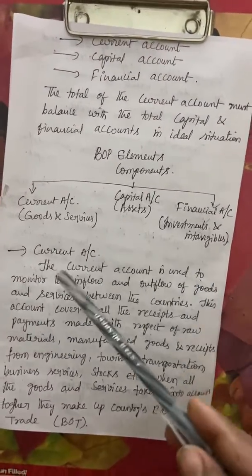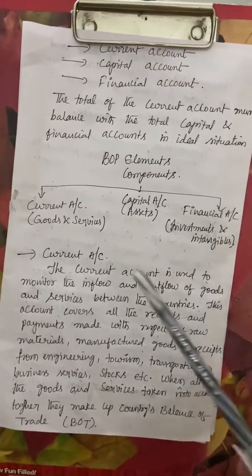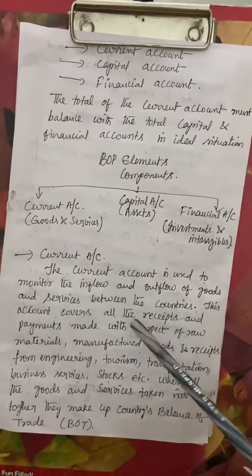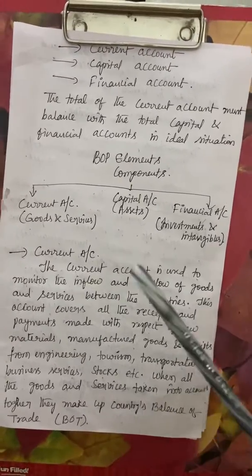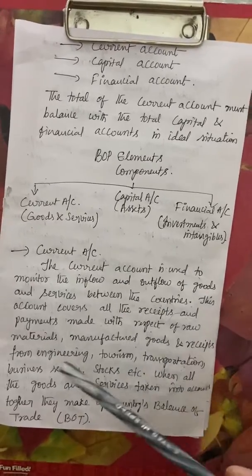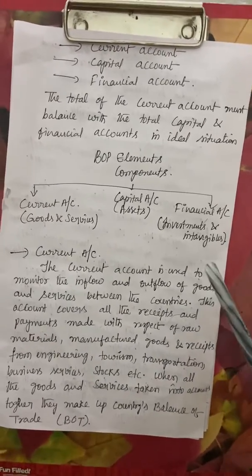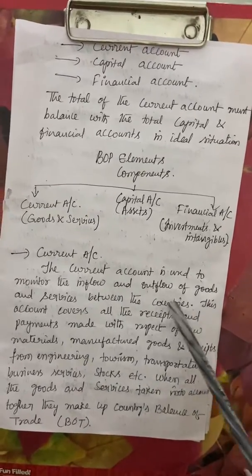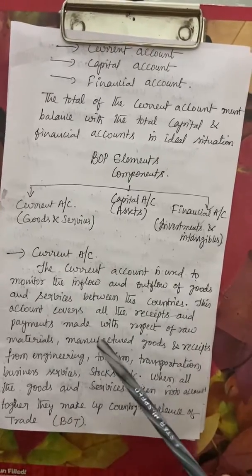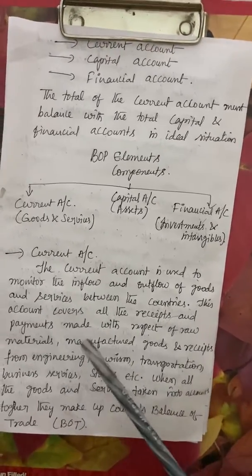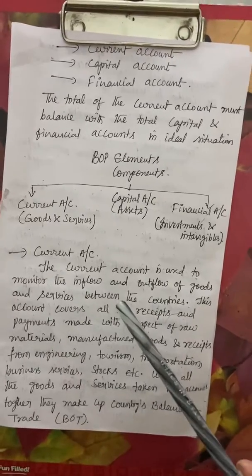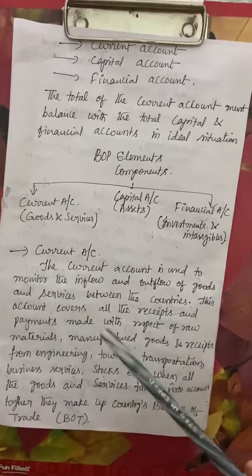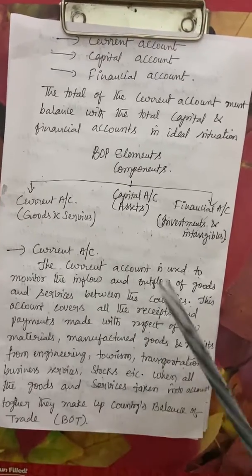The current account is used to monitor the inflow and outflow of goods and services between countries — how many goods are imported into the country and how many goods are exported. This account covers the receipts and payments made in respect of raw materials, machinery, or manufactured goods, and what is received and paid for all these things.